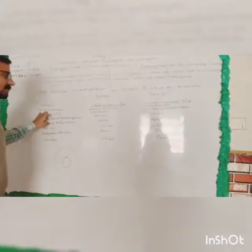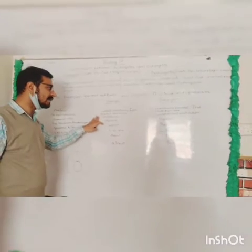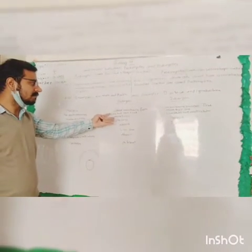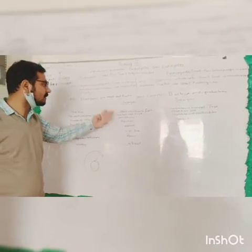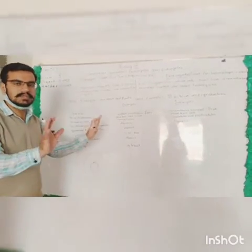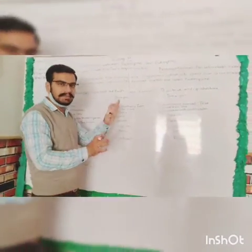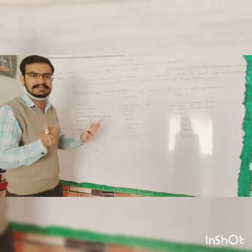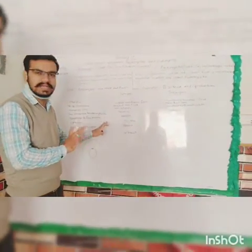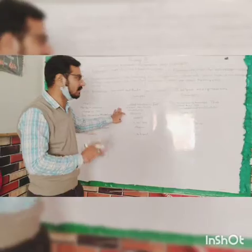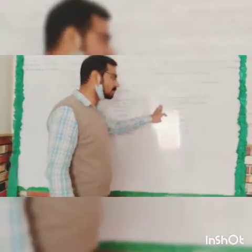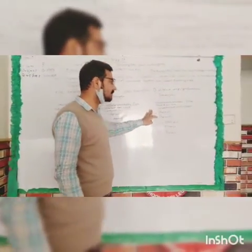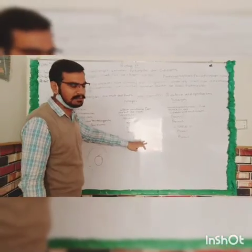Now we look at chromosomes. In prokaryotic cells there is only one chromosome, and it is not a complete chromosome. In eukaryotic cells, the number of chromosomes is higher — there are multiple complete chromosomes.